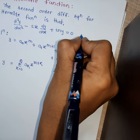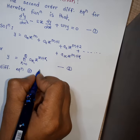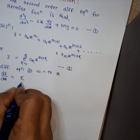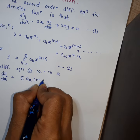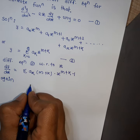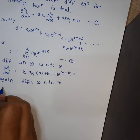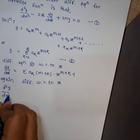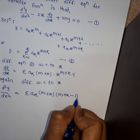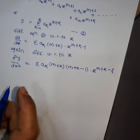Differentiating equation 2 with respect to x: dy/dx equals summation over aₖ(m+k) x^(m+k−1). Differentiating again: d²y/dx² equals summation over aₖ(m+k)(m+k−1) x^(m+k−2).